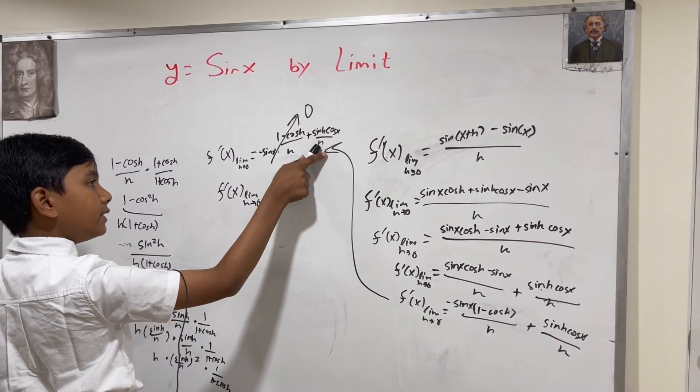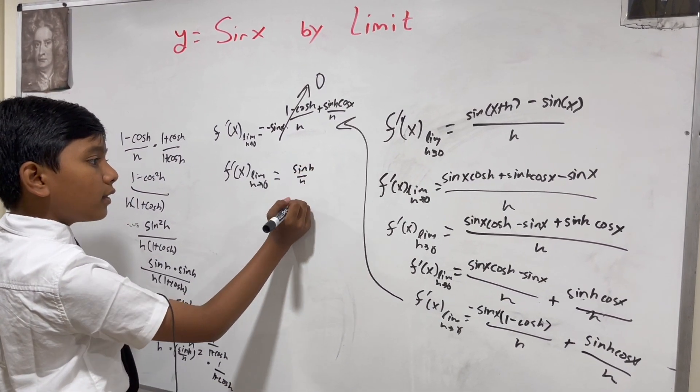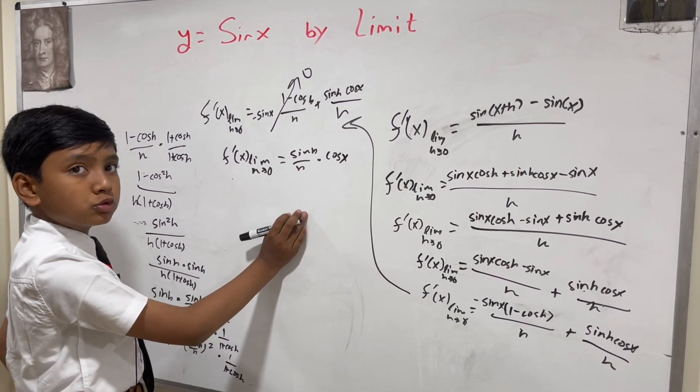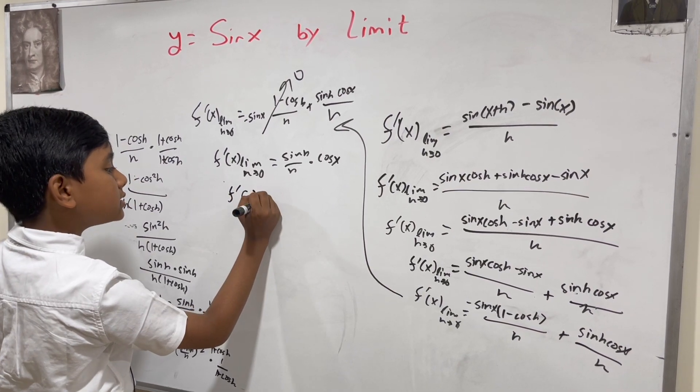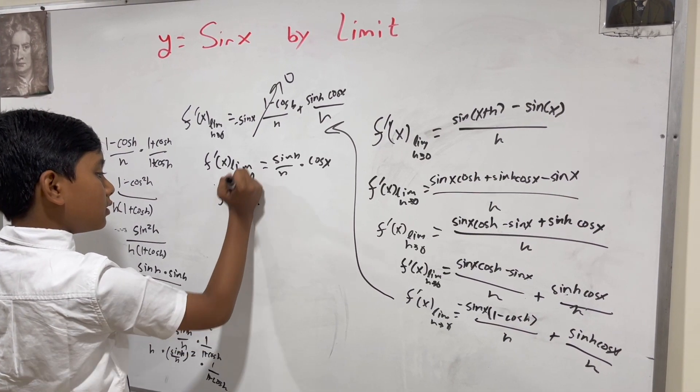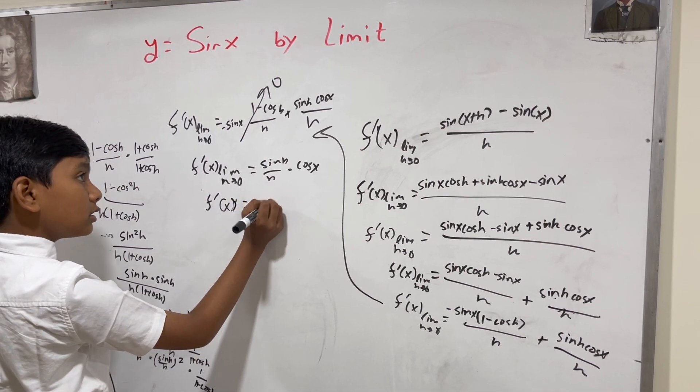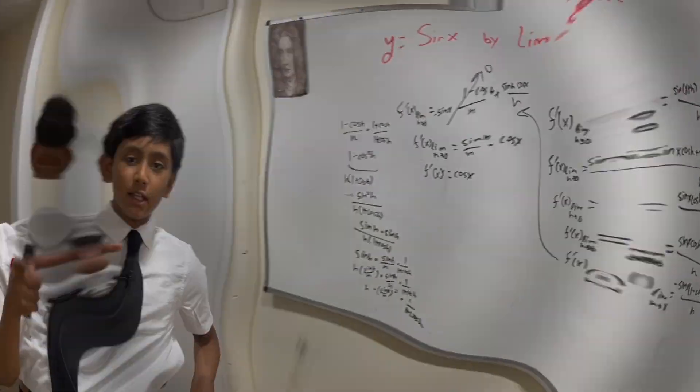Remember that sine of h over h is going to approach 1 as h approaches 0, so that gives us cosine of x. That's it, thank you everybody for watching, we'll see you in the next video.